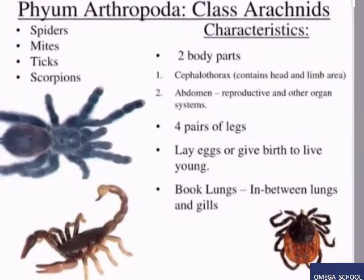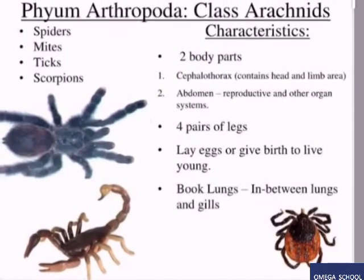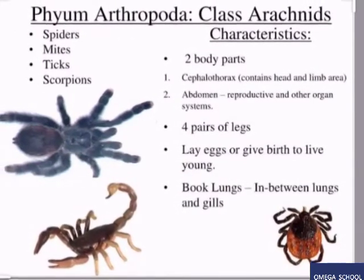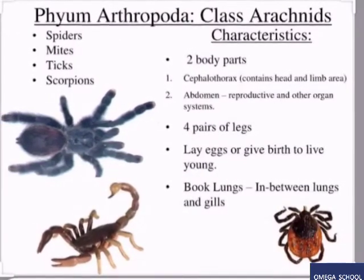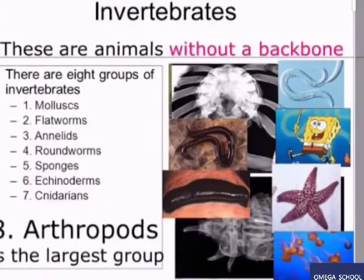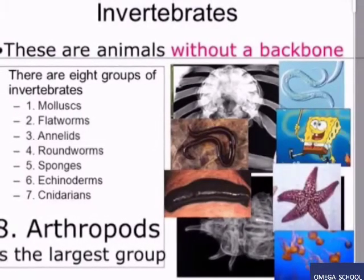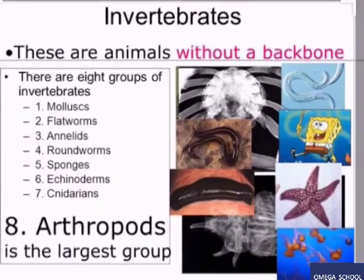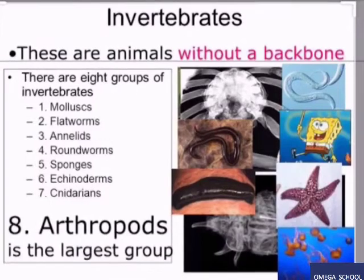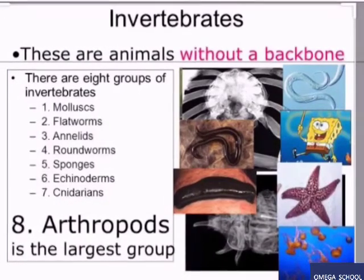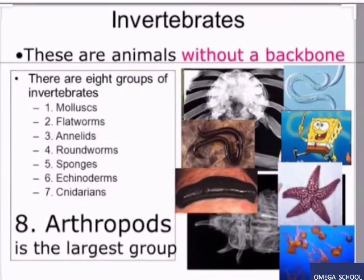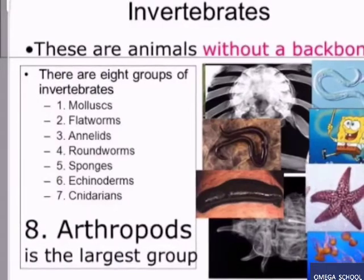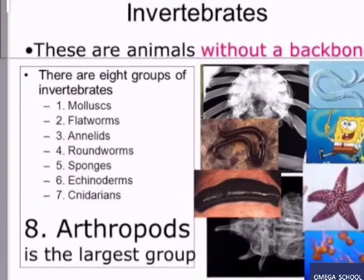Spiders, mites, ticks, and scorpions are classified in the class Arachnida. To summarize, invertebrates are animals without a backbone, and we have covered all the main groups of invertebrates. In the next video we will look at vertebrates.